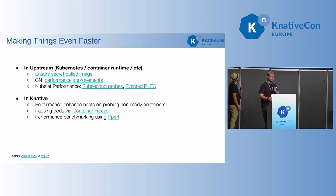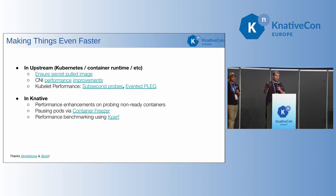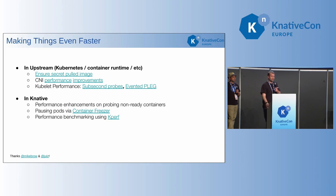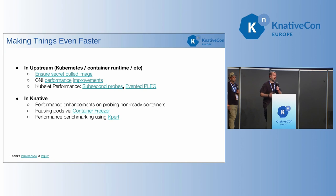There's a KEP for 'ensure secrets pulled image' that will let you not use the latest tag but still do the security authentication check on your image — that will speed up image pulls. There are also CNI layer performance improvements: PRs that load CNI plug-ins in parallel instead of in sequence, which speeds up runtime. There's work disabling DAD, which has dropped about a second off the runtime.